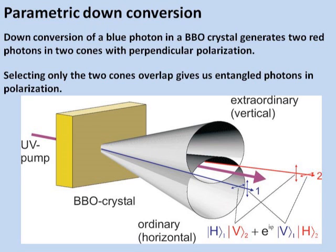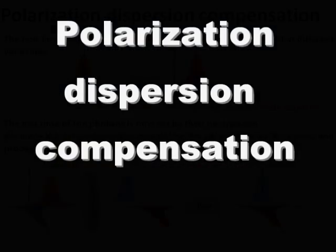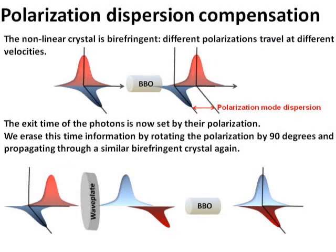This is our source of polarization entangled photon pairs. The BBO crystal is birefringent. Different polarizations travel at different velocities. The exit time of the photons is therefore a function of their polarization. To erase this time information,